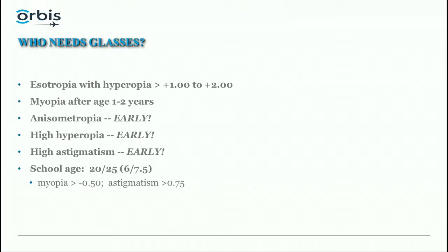Who needs glasses? Esotropia in the presence of hyperopia more than plus one or two — we need to give glasses for that. Myopia — a significant amount after age one or two — we give glasses so children can see the world and look far away, not just focus on things they're holding.